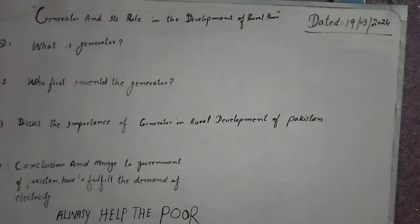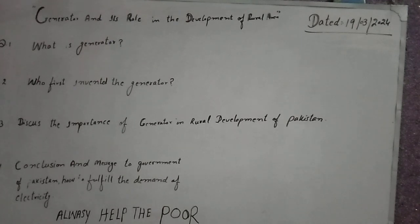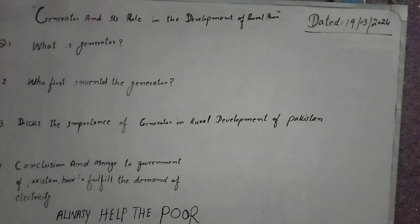Now we come to the fourth question: discuss the importance of generator in rural development of Pakistan. In rural areas there are natural resources — there is water, there is wind, there is oil, and there are natural gases. These resources are all used for running the generator. If we run a machine and through that machine we run the generator, it will produce the electricity.